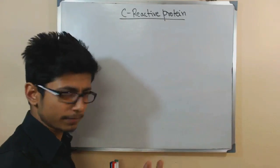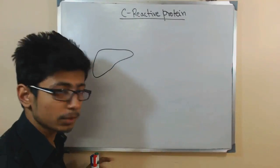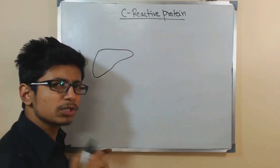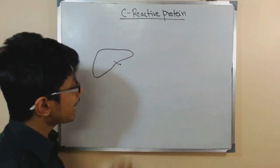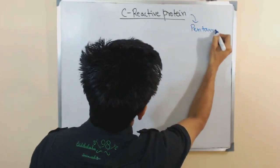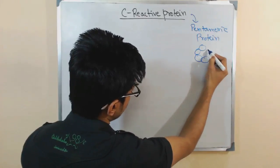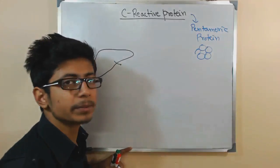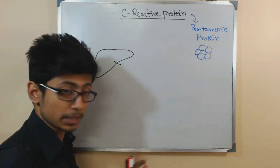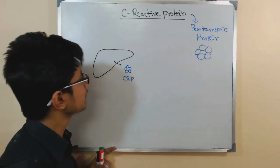CRP is generally produced by liver cells — the hepatocyte cells. Those cells produce CRP in very, very tiny amounts throughout the time. If you look at the structure of CRP, what we find is that it is a pentameric protein, meaning it has five different subunits attached to each other. Those monomers build up in hepatocytes and are assembled together to produce a pentameric CRP protein.